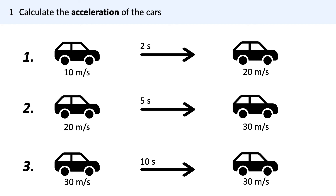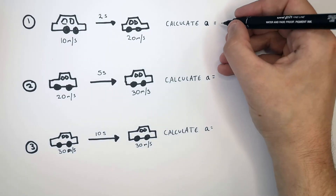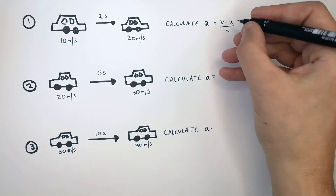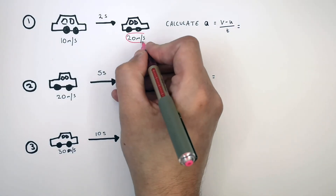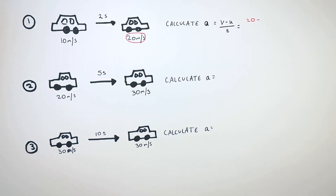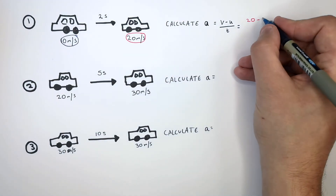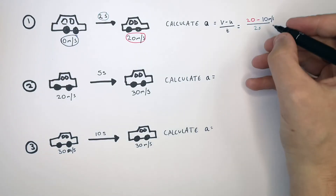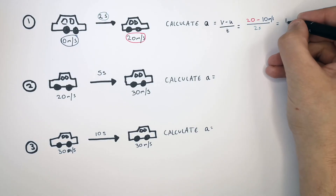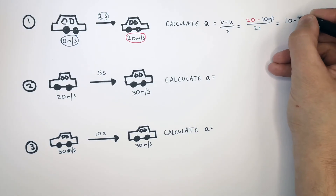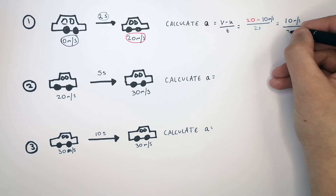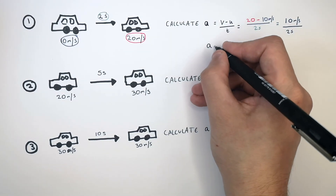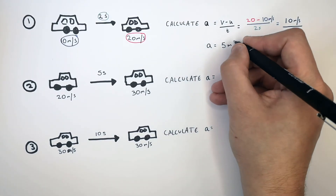Press pause to calculate the acceleration of cars 1, 2, and 3. Recall the equation a equals v minus u over t. The final velocity v is 20 meters per second, minus 10 meters per second the initial velocity, divided by time, which is 2 seconds. The change in velocity is 20 minus 10, which is 10 meters per second, divided by 2 seconds. That gives you an acceleration of 5 meters per second squared.